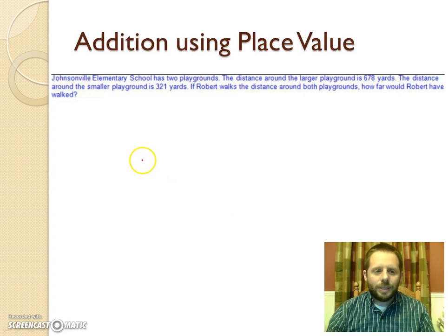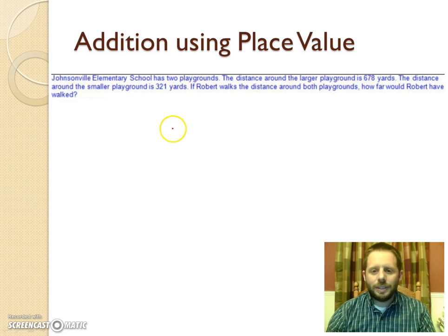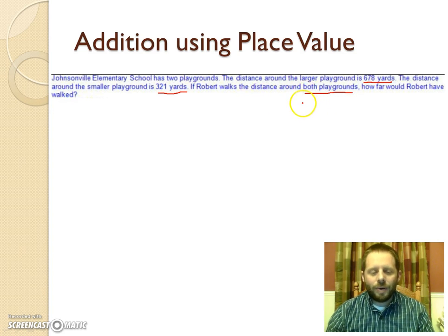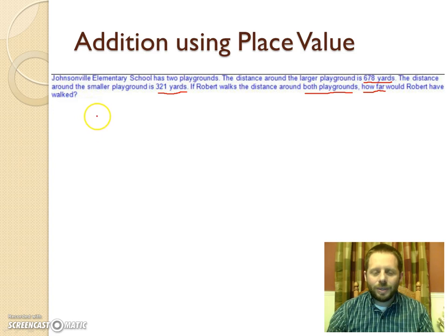Here we have an example: Johnsonville Elementary School has two playgrounds. The distance around the larger playground is 678 yards; the distance around the smaller one is 321 yards. If Robert walks the distance around both playgrounds, how far would Robert have walked? We want the total distance Robert walked, so that tells us we're going to be adding those two values.